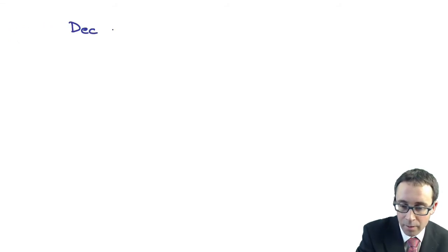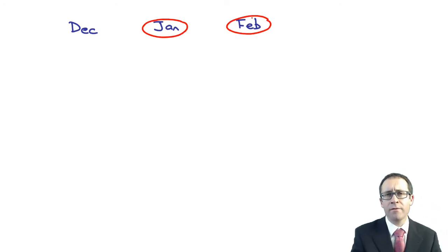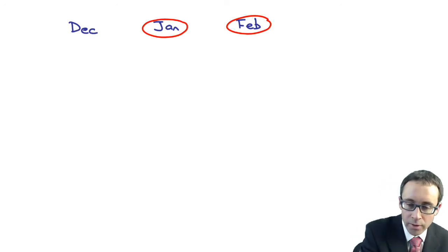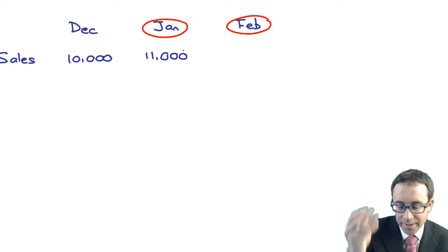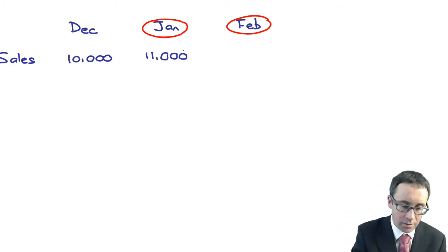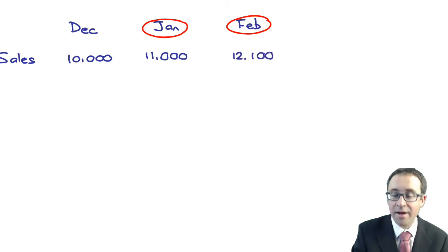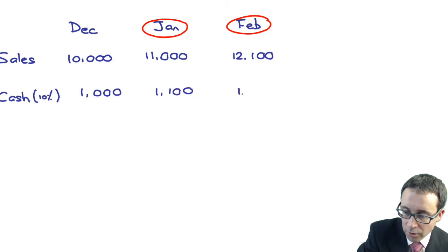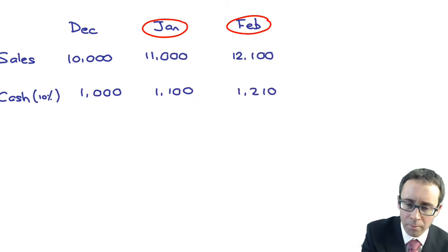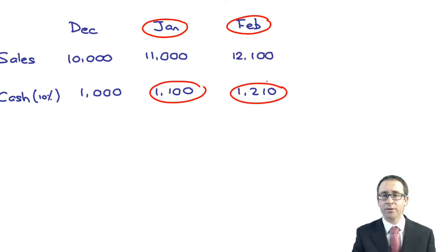We're only asked for the cash inflows from January and February, but we might need the December information to help us as well. Starting with sales: December was 10,000; January is 11,000; February is 12,100 — increasing by 10% each month. Of those sales, we can work out the cash sales at 10%: that's 1,000 for December, 1,100 for January, and 1,210 for February. The figures we're interested in for our cash inflows are 1,100 for January and 1,210 for February.